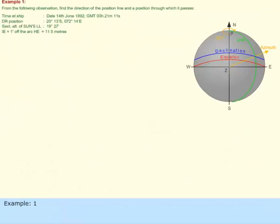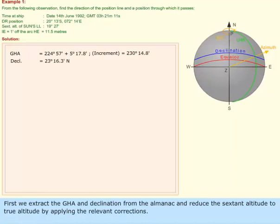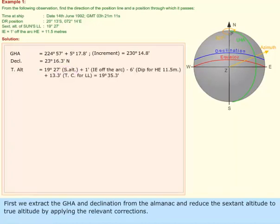Example 1. First, we extract the GHA and declination from the almanac and reduce the sextant altitude to true altitude by applying the relevant corrections.